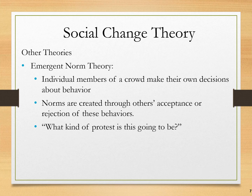Emergent norm theory is a related but quite different idea. Rather than people becoming infected by the group's collective behavior, emergent norm theory sees people effectively voting subconsciously on the group's behavior. For example, at a rally, the speaker gets impassioned, people are nodding along, and then one person in the crowd picks up a rock and throws it at the police who are observing.